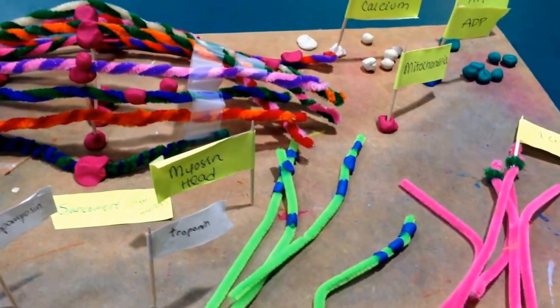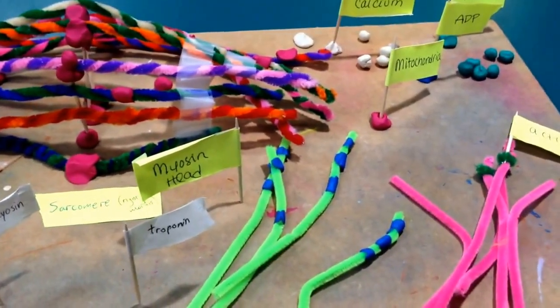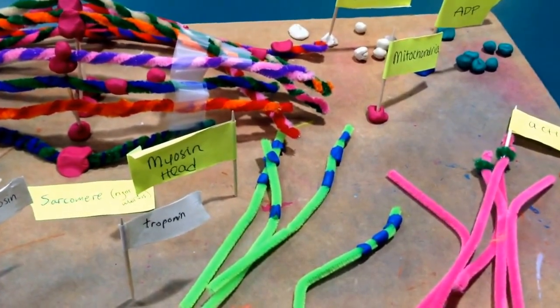In order to slide past the other, the myosin heads will interact with the actin filaments and, using ATP, bend to pull past the actin.